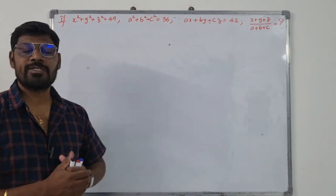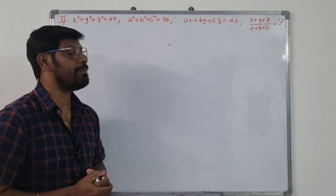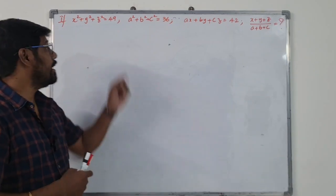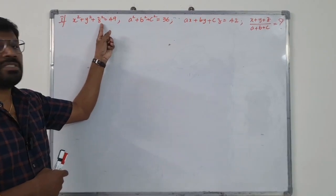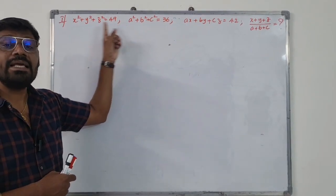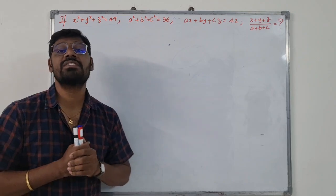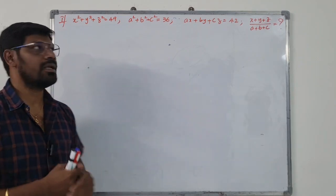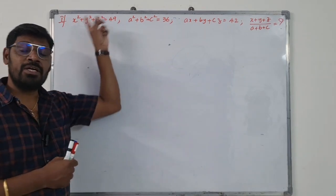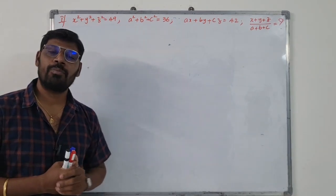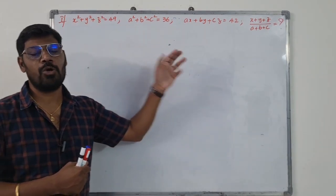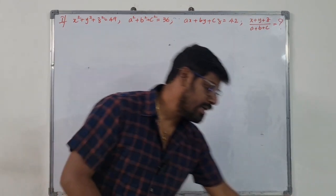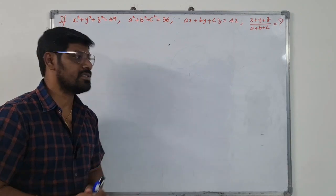What is the value of (x plus y plus z) divided by (a plus b plus c)? The wrong assumption is that x squared plus y squared plus z squared equals 49 means x plus y plus z equals 7, which is completely wrong. If (x plus y plus z) whole squared equals 49, then x plus y plus z equals 7. So this problem is quite interesting.